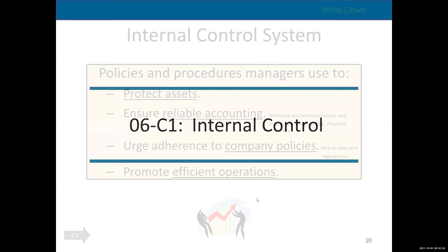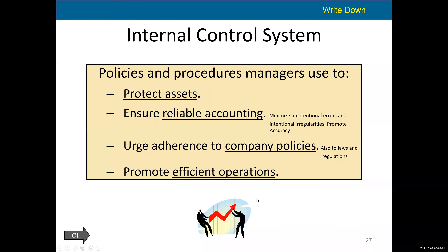What is internal control? Internal control is policies and procedures that managers use to protect assets and ensure reliable accounting. What I mean by that is we're trying to minimize unintentional errors, like mistakes — transposing something or forgetting to do something — but also intentional irregularities, meaning people trying to embezzle from you and commit fraud.